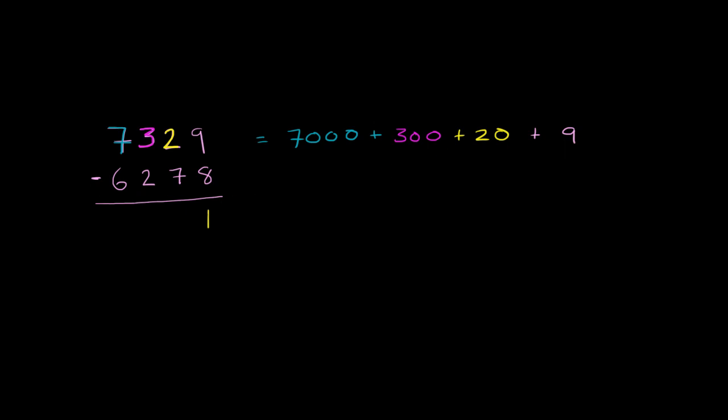And then down here we have the 6 in the thousands place. That's just going to be 6,000. And we're subtracting. So minus 6,000. And then here we have a 2 in the hundreds place. And once again, we're going to be subtracting all of these. So we're going to be subtracting 200. And then here in the tens place, we have our 7. We're subtracting it. So 7 tens, that's 70. And then we are subtracting that 8.